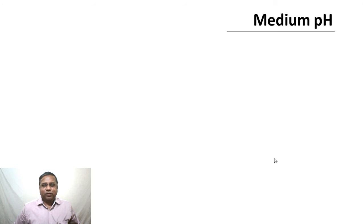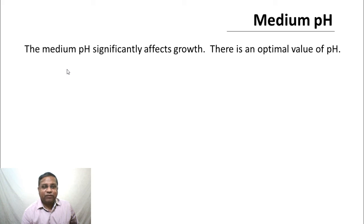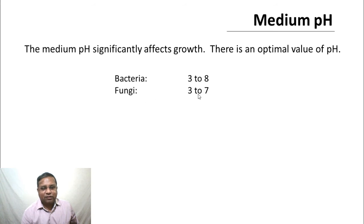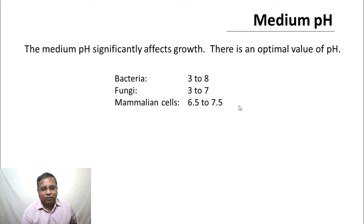The second variable is pH of the medium. pH is the negative of the logarithm of hydrogen ion concentration. The medium pH significantly affects growth, and there is an optimal value. For bacteria, growth can occur well between pH 3 and 8. For fungi, roughly pH 3 to 7. Mammalian cells are very strict — they can grow only if the medium pH is between 6.5 and 7.5; below 6.5 or above 7.5, they do not grow.